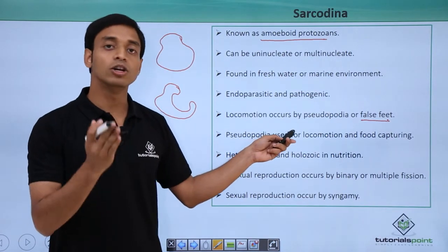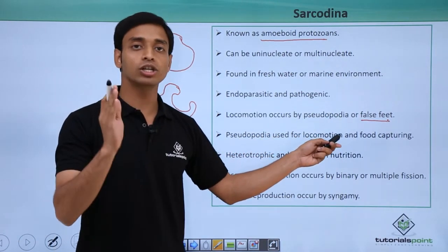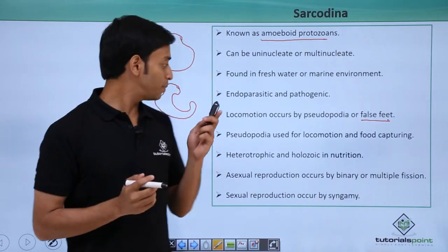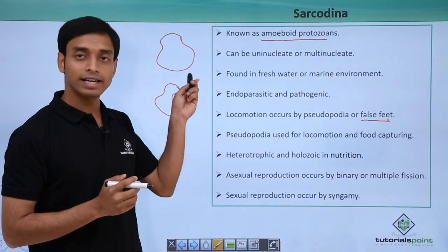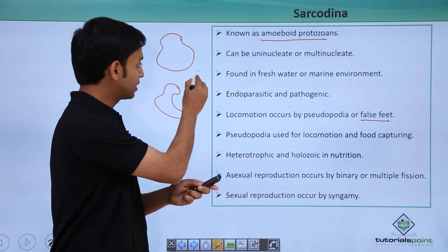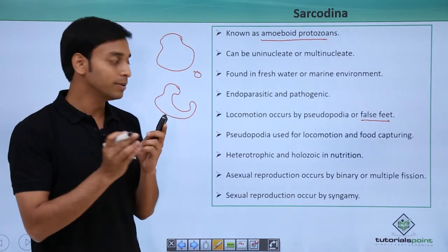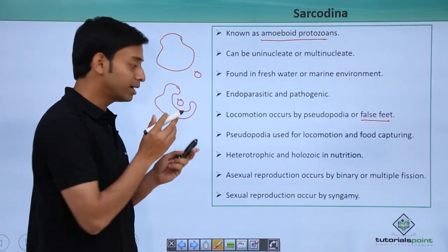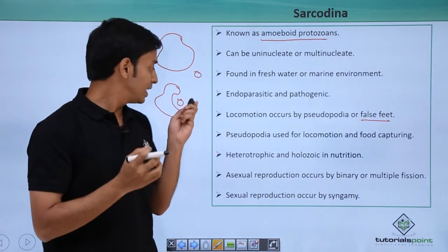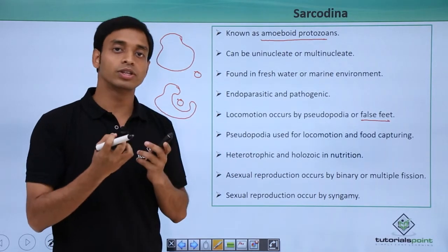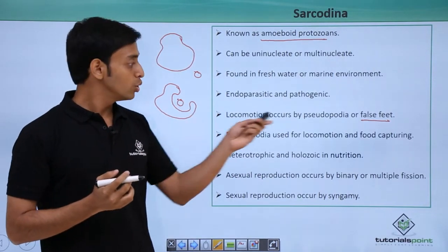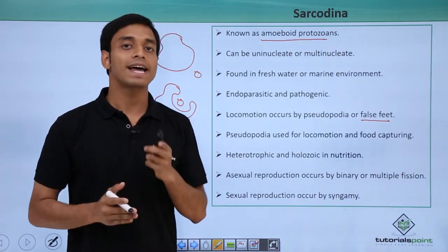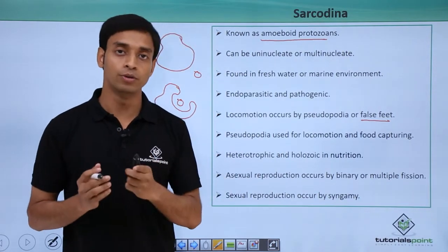Pseudopodia help in locomotion and in addition to that they also help in capturing food. Suppose this is a cell and in the environment there is a food particle — the pseudopodia grows out, engulfs the food material, and slowly takes it within the body of the organism. So these false feet help in both locomotion and capturing of food.